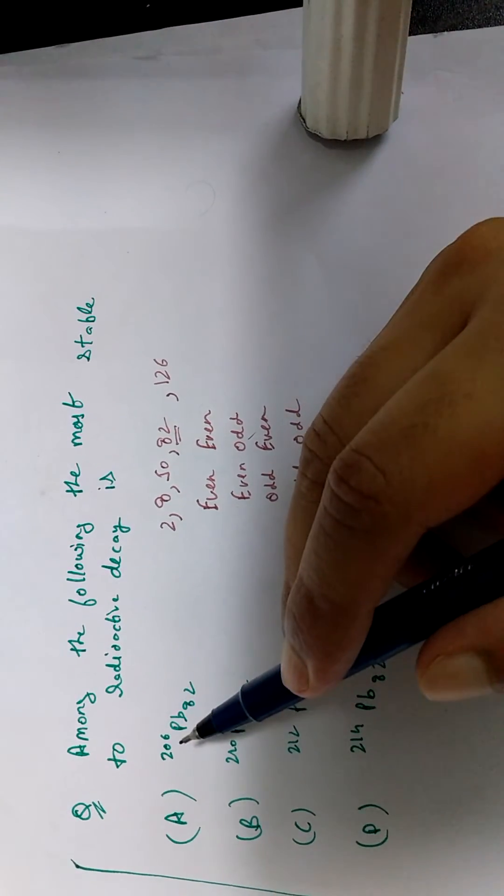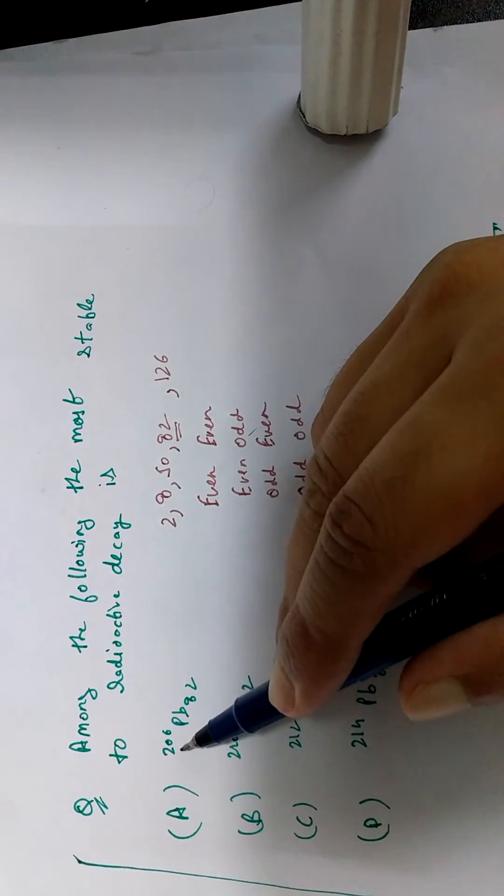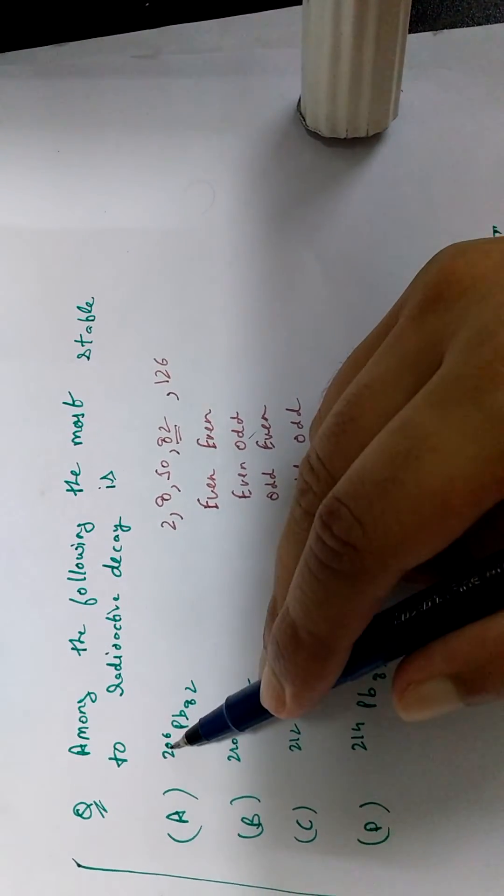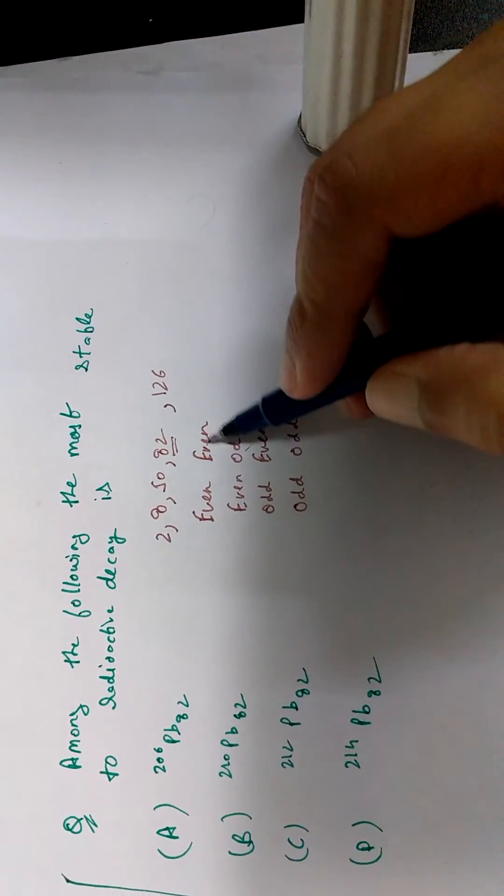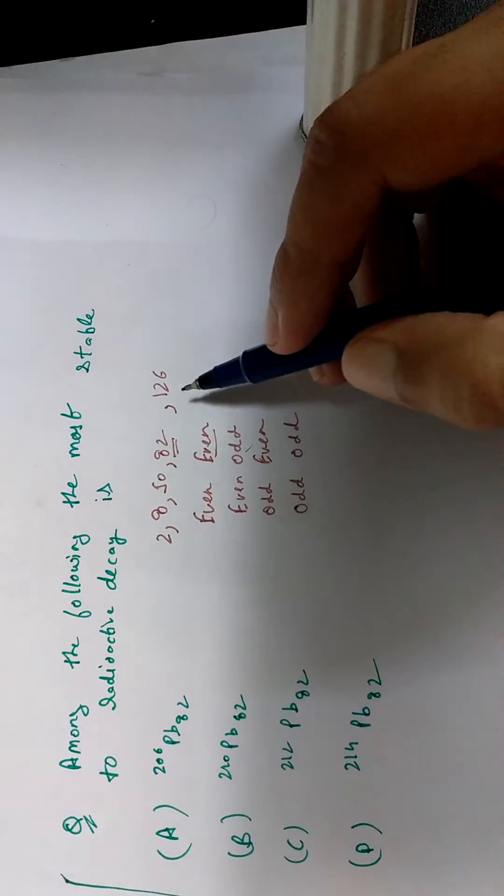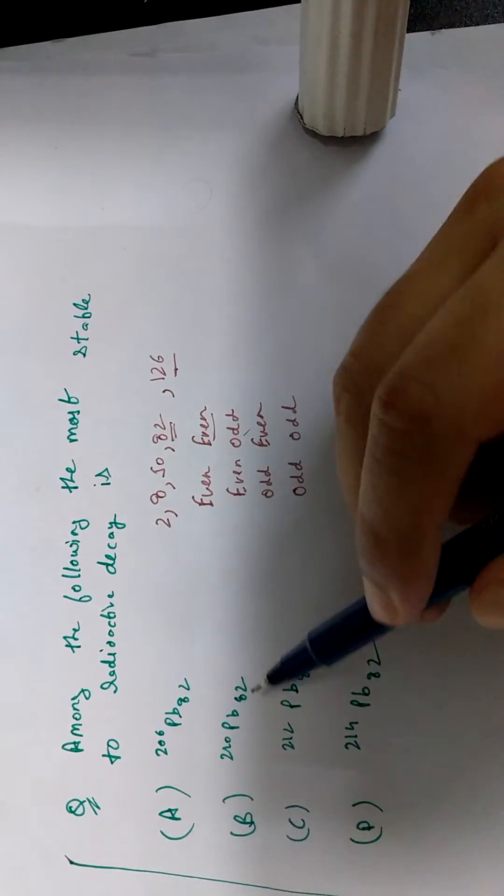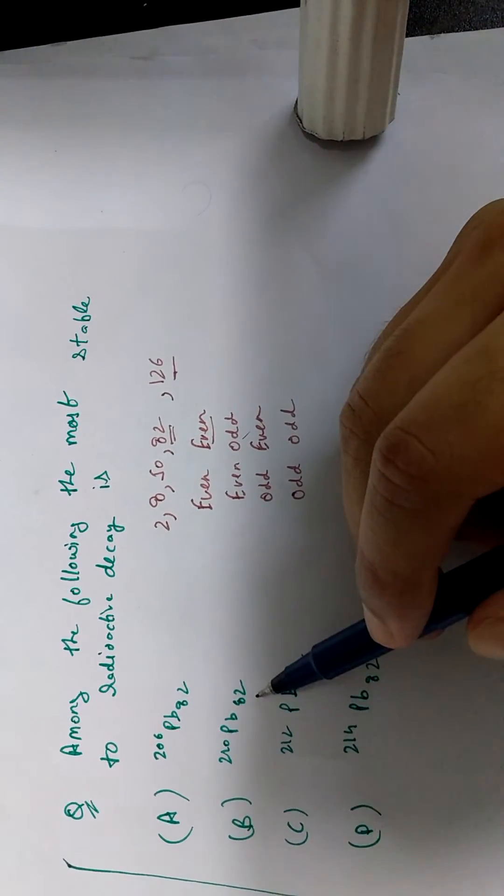So to calculate the number of neutrons, you can just subtract from 206 number of protons. So 206 minus 82 will give you 124, which is an even number, fair enough, but it isn't the magic number, which is 126.